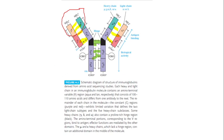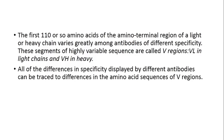When considering antibodies of a single class, the main variation among antibodies is seen in these ~110 amino acids present in the amino-terminal region, because these are the regions where antigen binds to the antibody. Within the same class, the constant regions are similar, but variation is seen only in this amino-terminal region of the heavy and light chain — known as the variable region.